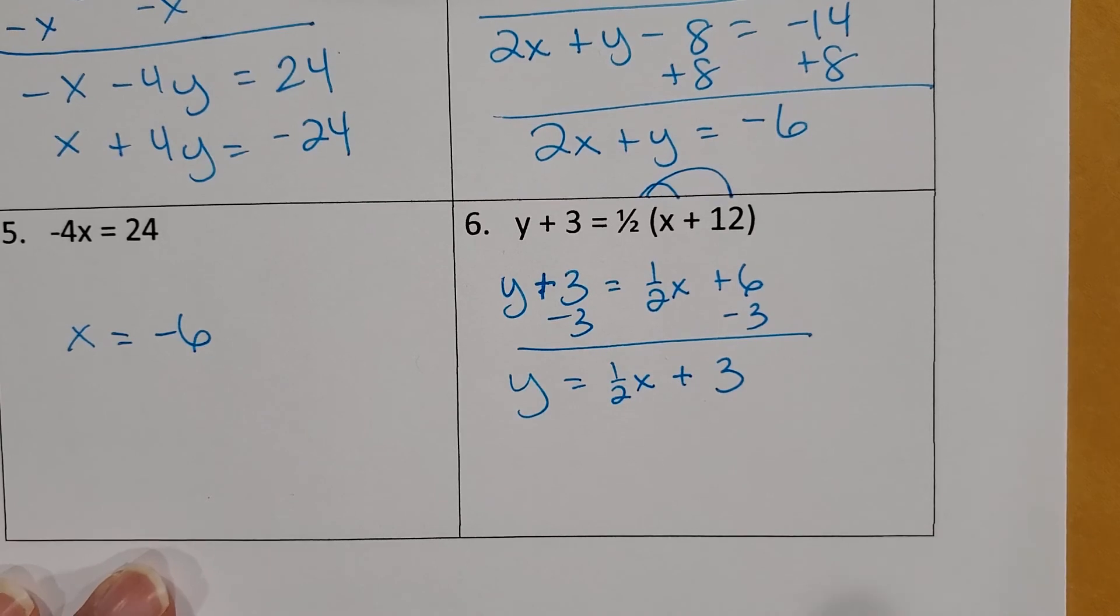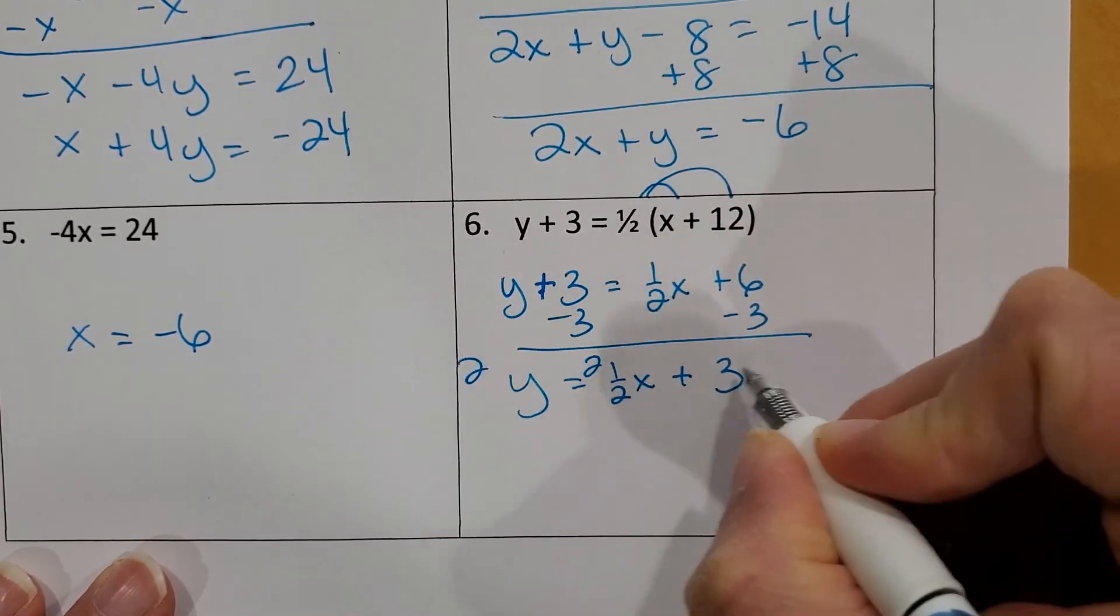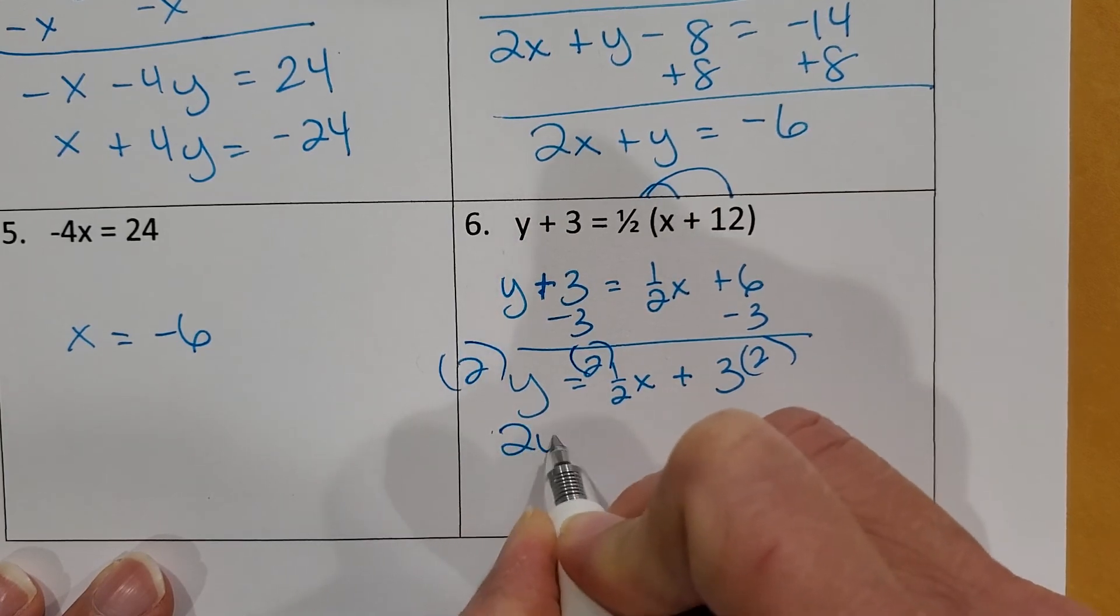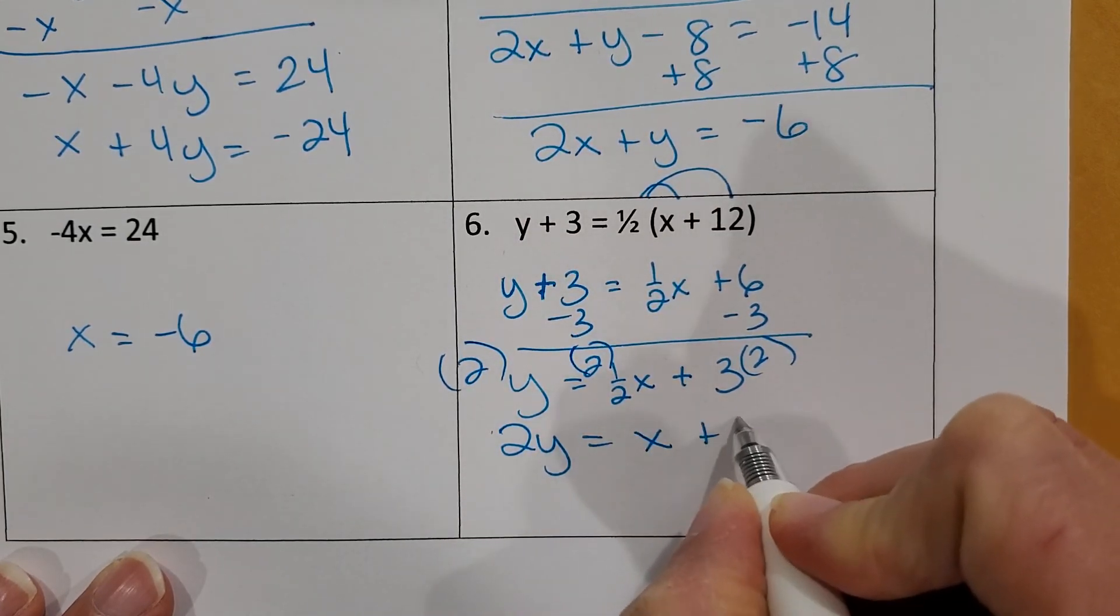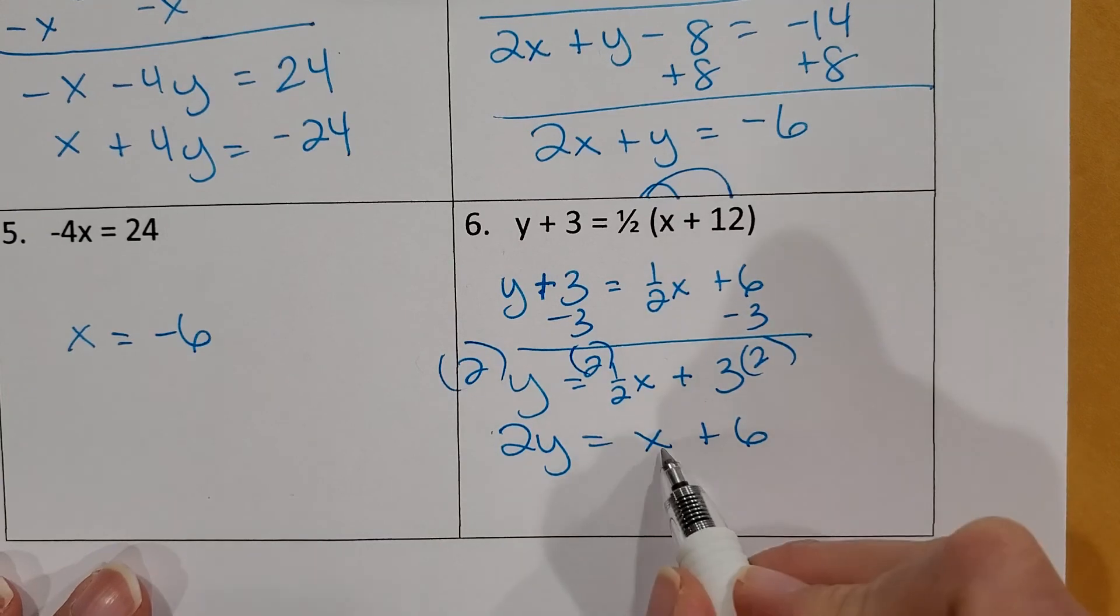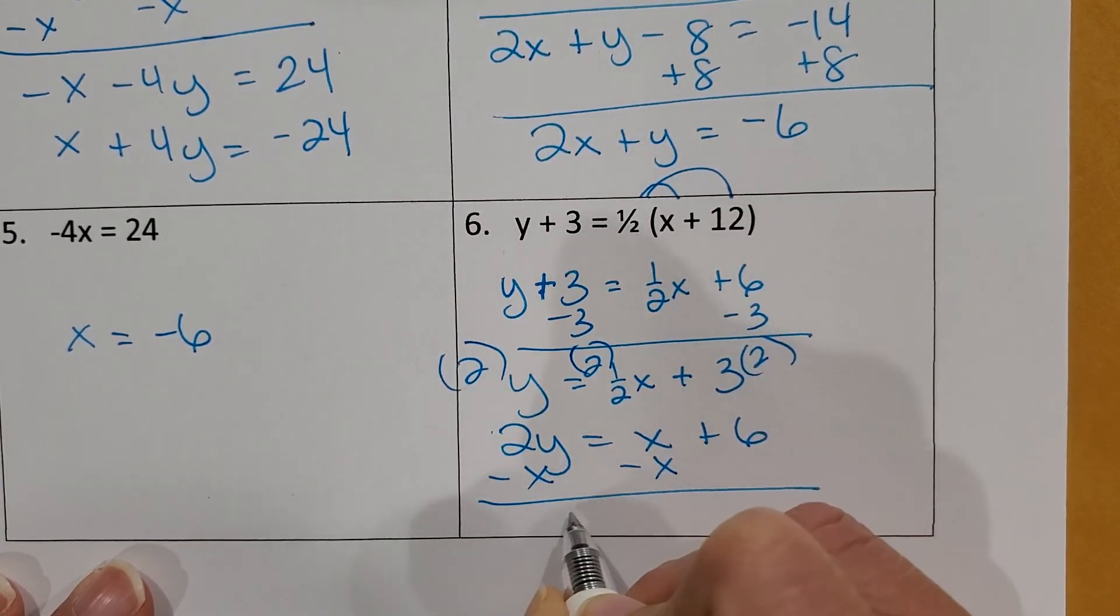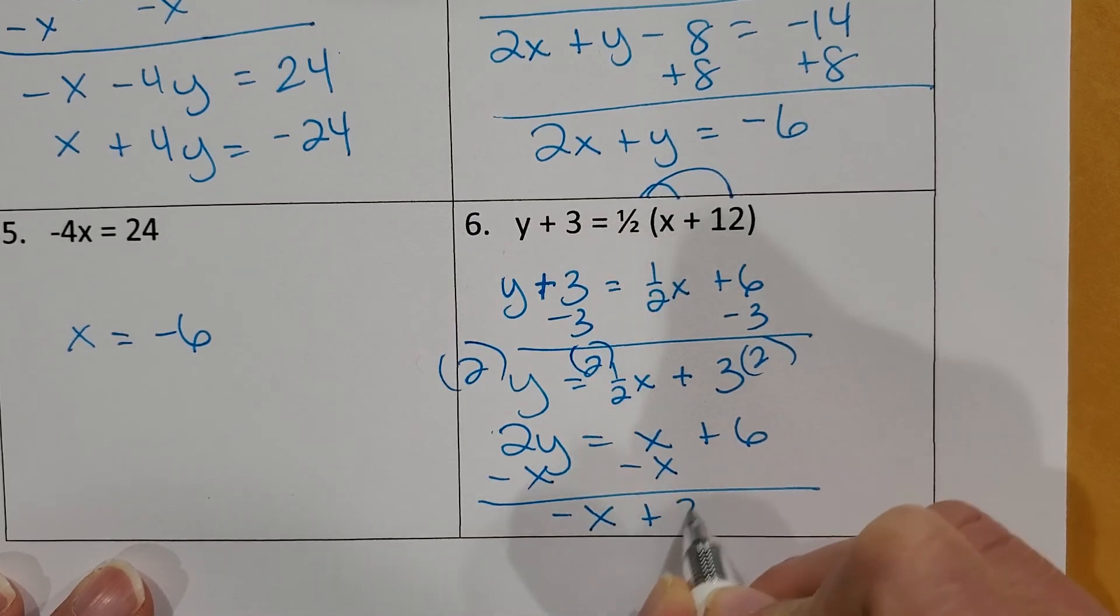And then I don't have to multiply as much by 2. And now I'm going to go ahead and multiply everything by 2. And then I'll move the X over. So if I multiply this by 2 and this by 2 and this by 2, I'm going to get 2Y equals X plus 6. And now it's not in standard form because I have X still on the right side. I'm going to move X to the left side. I get negative X plus 2Y equals 6.